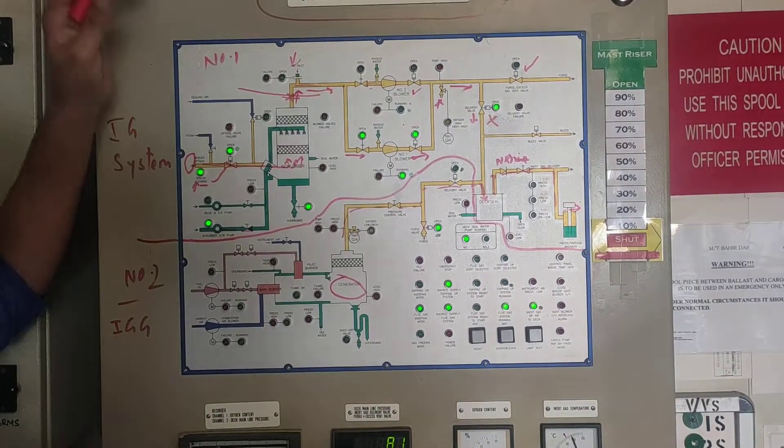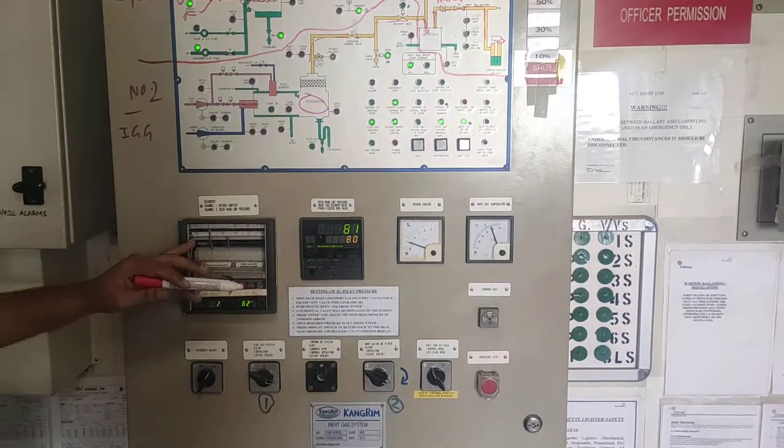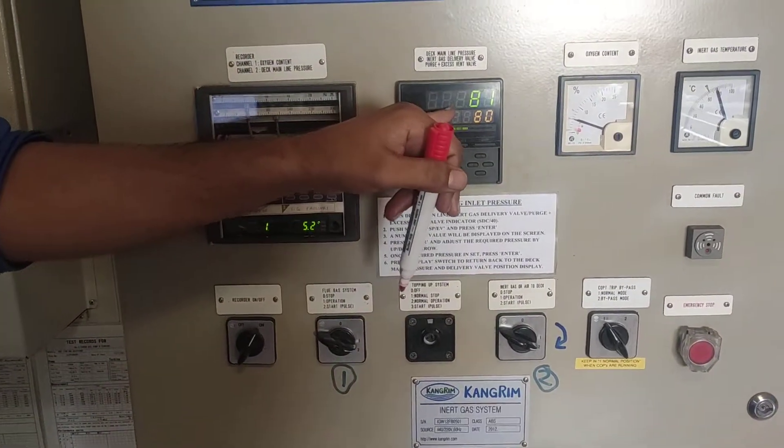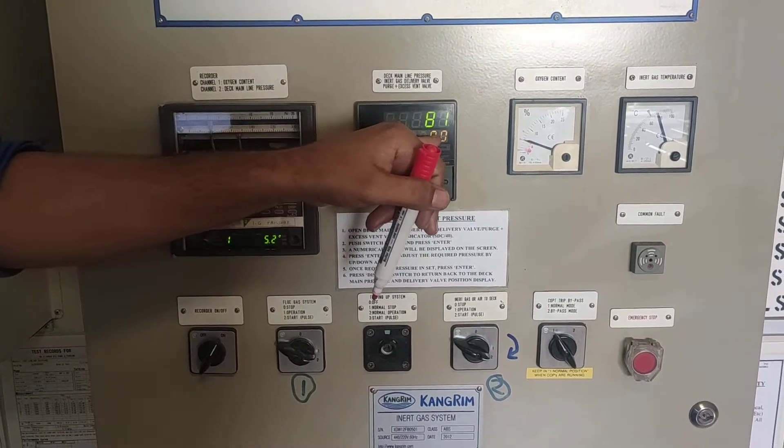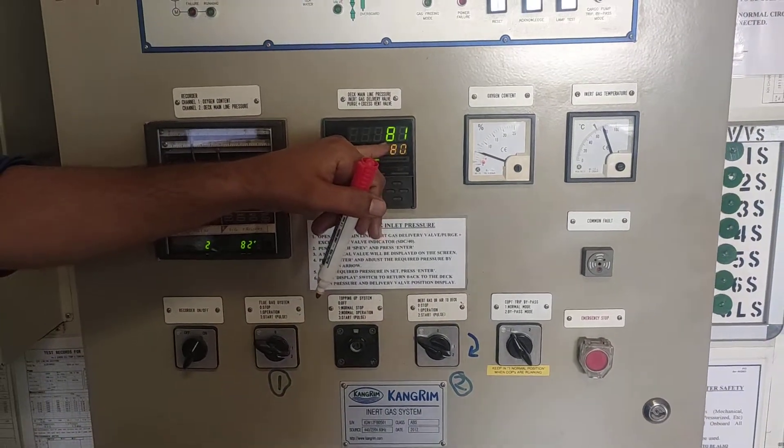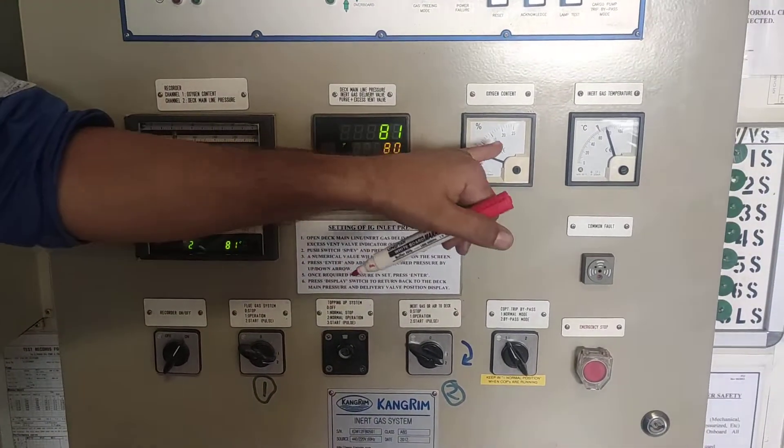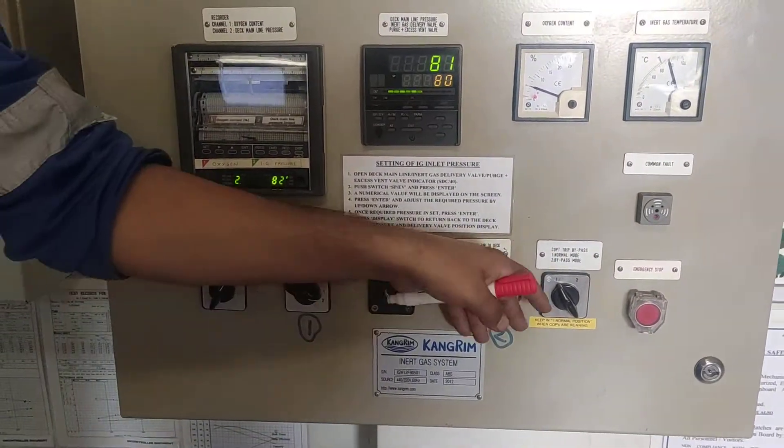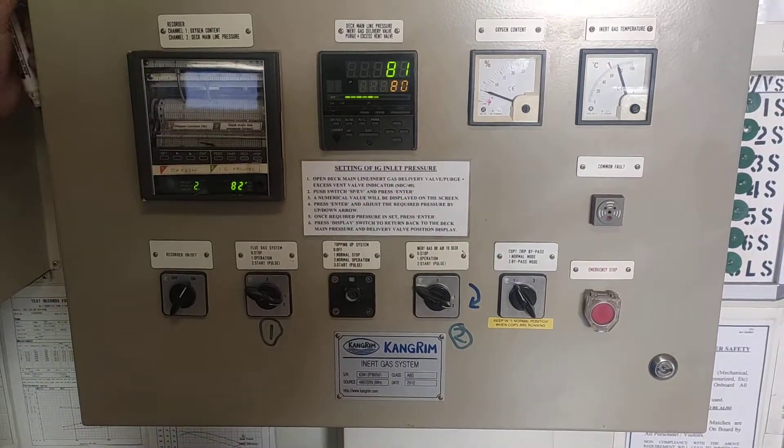Thank you for watching this video. These are the various controls of the IG panel. This gives, this is the recorder of oxygen and pressure. This is the recorder of the pressure. Right now it is 800 mwg. You can set this pressure here. This gives you the oxygen content. This gives you the inert gas temperature. And this is the system for starting the IG panel.